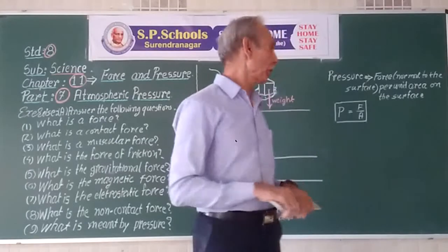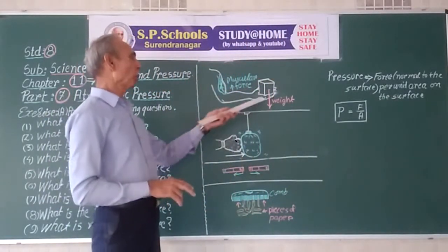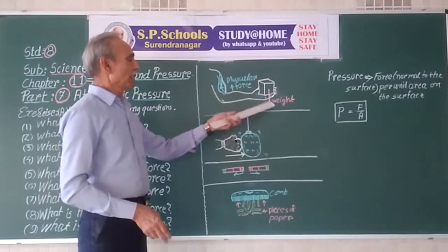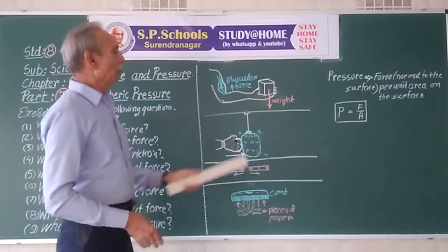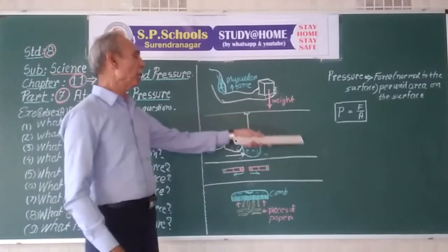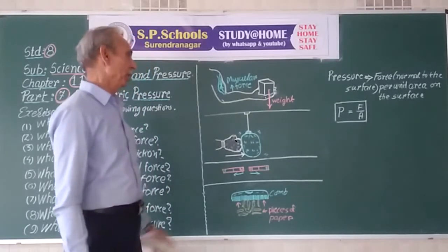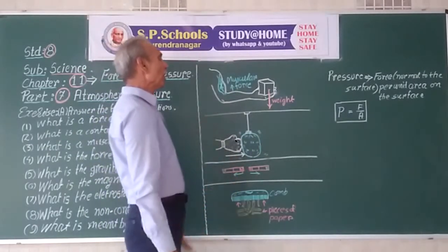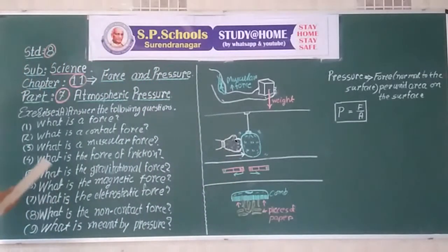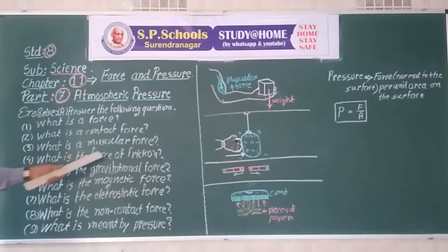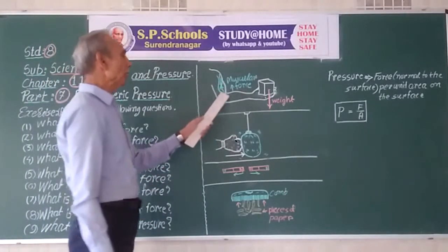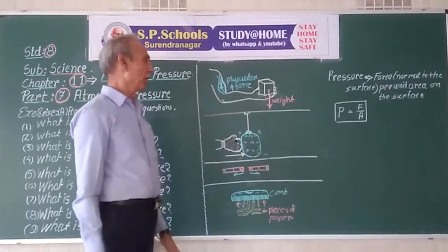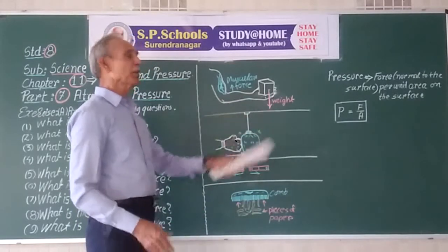Suppose you want to push or pull a weight. A weight has a force downward. This force is because of gravitation. It is the weight. To uplift the body, we have to exert muscular force. Muscular force is the force developed in muscles to act on a body. These are contact forces.